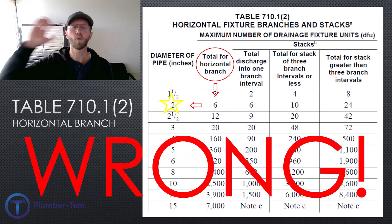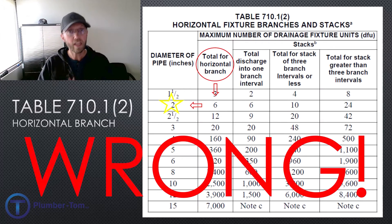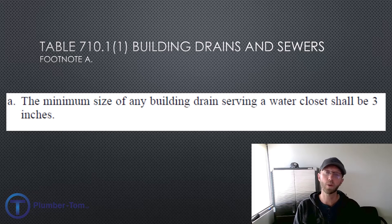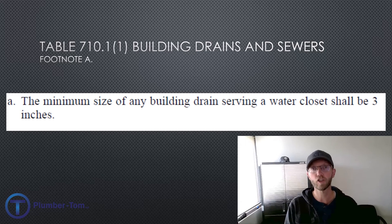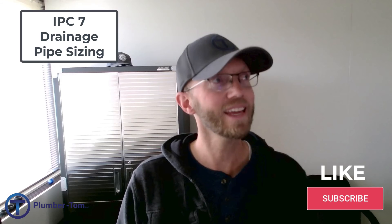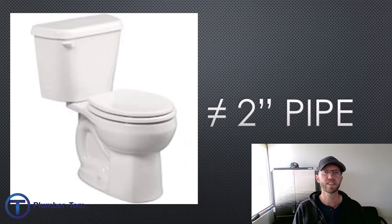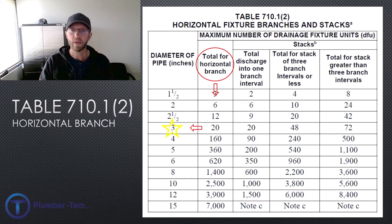That result — two inch pipe — is wrong. You cannot put a toilet into a two-inch pipe. This is where footnotes become important. Table 710.1 for building drains and sewers specifically states that the minimum size of any building drain serving a water closet shall be three inch. Basically, you're not installing anything smaller than three inch for a building drain because nearly every building has a toilet. So we follow down to the next size, which is three-inch pipe.